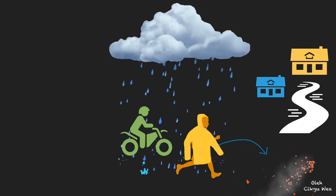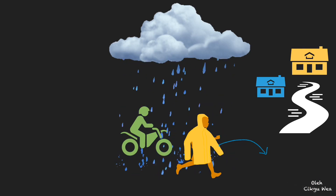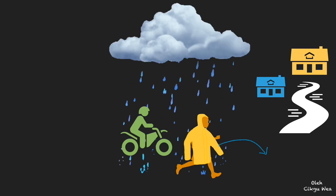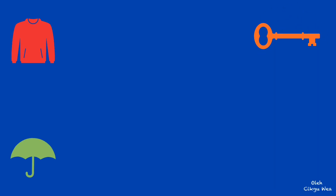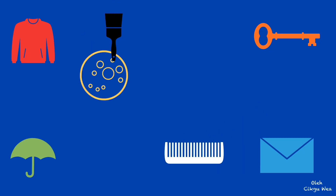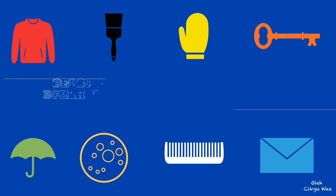Manakala, Pak Mael tidak memakai baju hujan. Siapakah di antara mereka yang tidak basah ketika sampai ke rumah? Ya, Akmal tidak basah kerana memakai baju hujan.